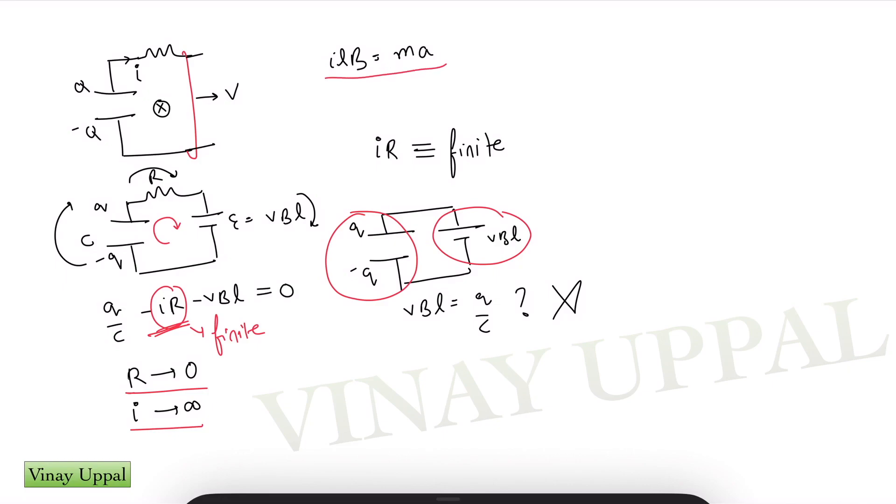So from this equation where I have I L B is equal to M A, if I were to just integrate it, I'll have integral I D T times L B is equal to M into integral A D T. So I'll have integral I D T is nothing but the charge that flows in the circuit, which will be Q minus q, where small q is the final charge on the positive plate times L B is equal to integral A D T will be the change in velocity. So initial velocity being zero, you will have M V.